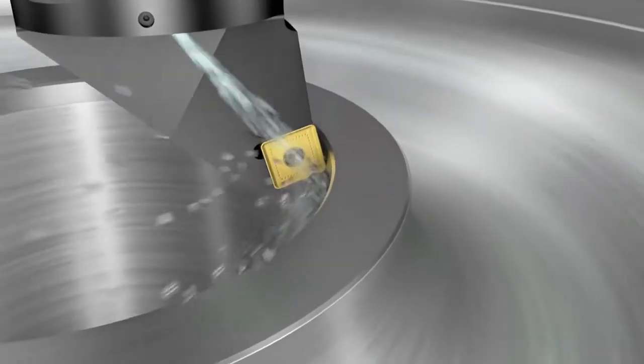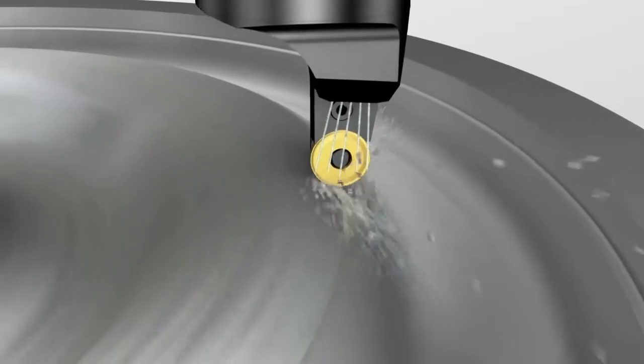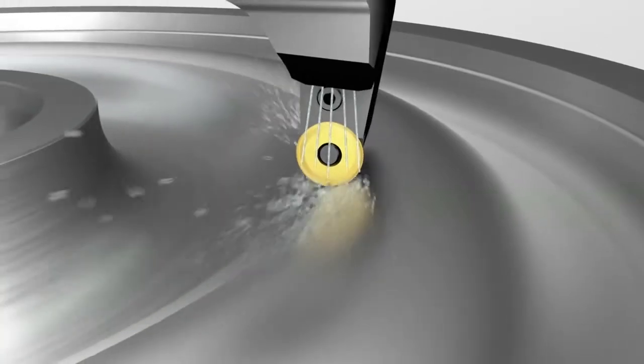The hub, web and rim on the wheel are machined. Round inserts are combined with over and under coolant for best performance and chip evacuation.